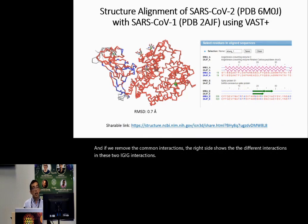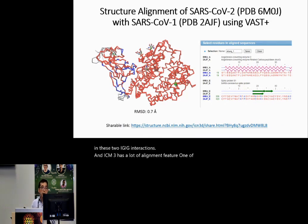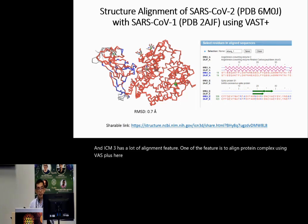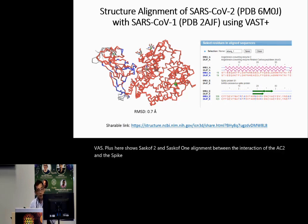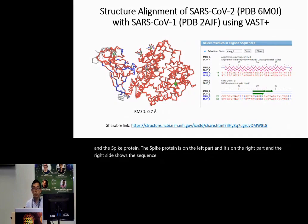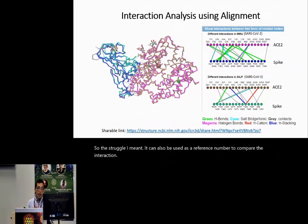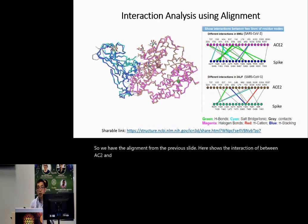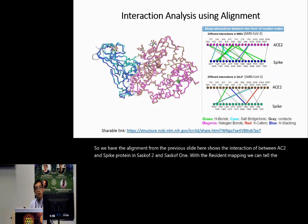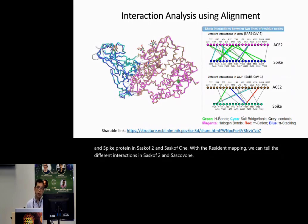ICN3D has many alignment features. One feature is aligning protein complexes using VAS+. Here is the SARS-CoV-2 and SARS-CoV-1 alignment of the interaction between ACE2 and the spike protein. The spike protein is on the left, ACE2 is on the right, and the right side shows the sequence mapping based on structure alignment. The structure alignment can also be used as a reference number to compare interactions, allowing us to identify different interactions between SARS-CoV-2 and SARS-CoV-1.